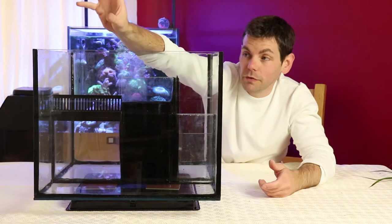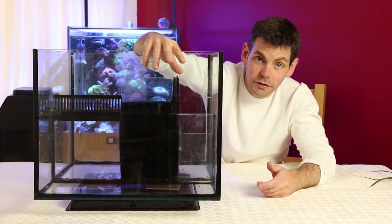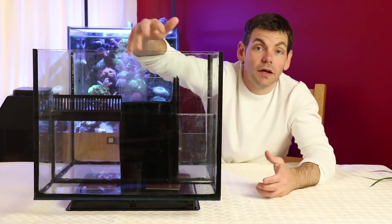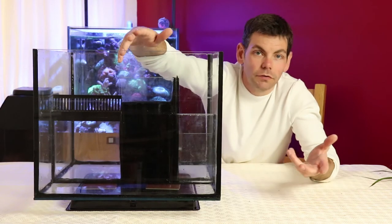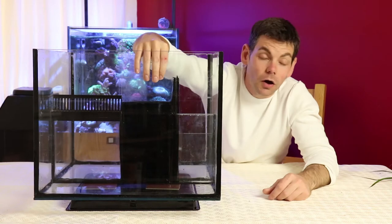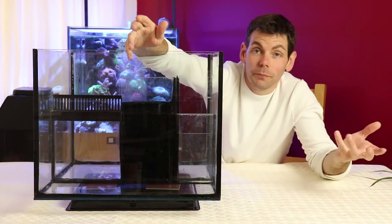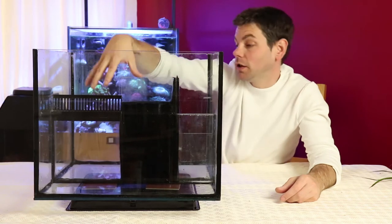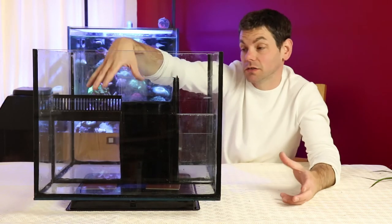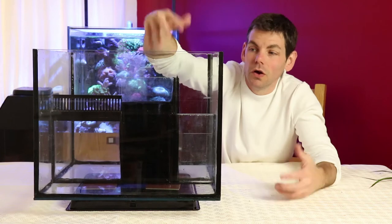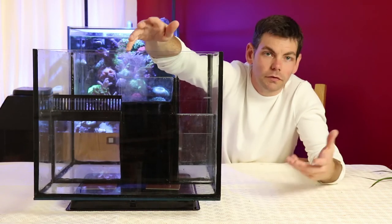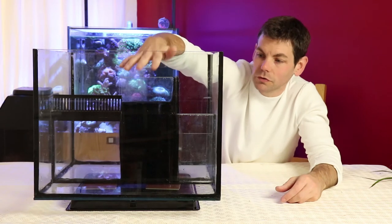In this front section I will have my skimmer and my calcium reactor, I will also have my heaters in there and possibly another reactor for phosphate remover or maybe carbon or biopellets, depending on what I'm running at the time, what I decide to run in this tank. It's going to be quite a large refugium for the size of the tank so I'm hoping I won't need to have quite so much in the way of phosphate remover and biopellets and all the rest of it. We'll see how that goes.